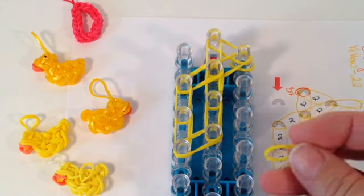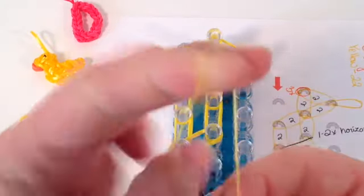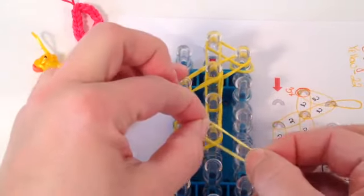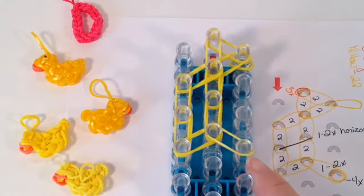This is an odd move. We're going to take one band, double twist it and place it from the center to the bottom right.